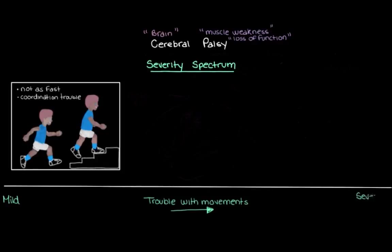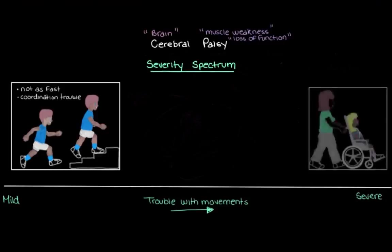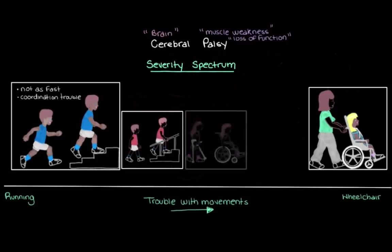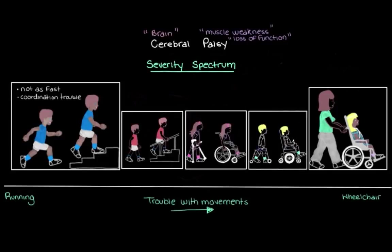If we head over to the severe end of our spectrum, the picture looks quite different. This girl also has cerebral palsy, but instead of being able to run around, she needs to be in a wheelchair. She's having trouble with her posture and needs to be held upright, and her cerebral palsy is so severe that she needs someone to operate her chair for her. So let's relabel the ends of our spectrum to better reflect the range: the severity spectrum for cerebral palsy goes from running to wheelchair, and everything in between.